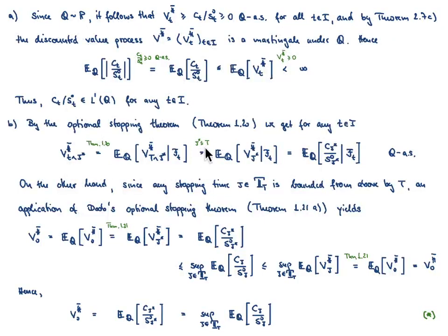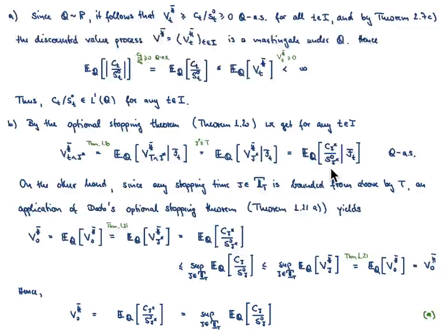On the other hand, since tau star is bounded from above by T, this minimum is clearly achieved at tau star. That is why we get that representation. And since tau star was the particular stopping time where the discounted value process coincides with the discounted American contingent claim, we obtain the representation: the discounted value process at time t minimum tau star equals the conditional expectation of the discounted American contingent claim evaluated at tau star, given F_t, Q almost surely.